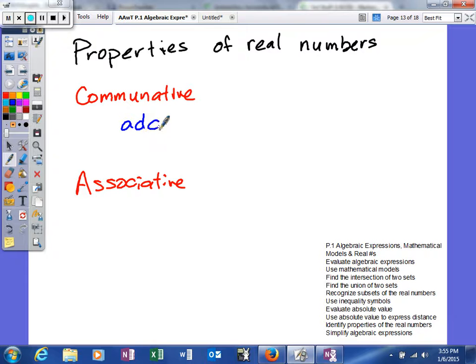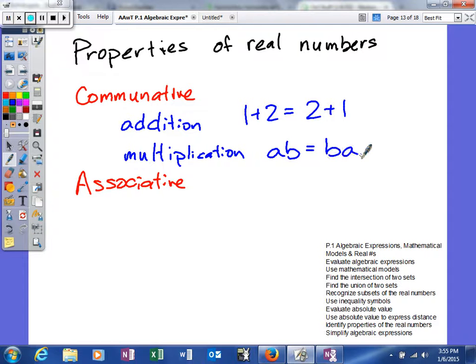There are two types. There's commutative property of addition and commutative property of multiplication. And what it means is basically you go one way and then you kind of go the other. So the commutative property of addition, I'll use one as a numerical example. So 1 + 2 = 2 + 1, and then I'll use one as an algebraic. So A times B equals B times A. So those are the examples of the commutative property.